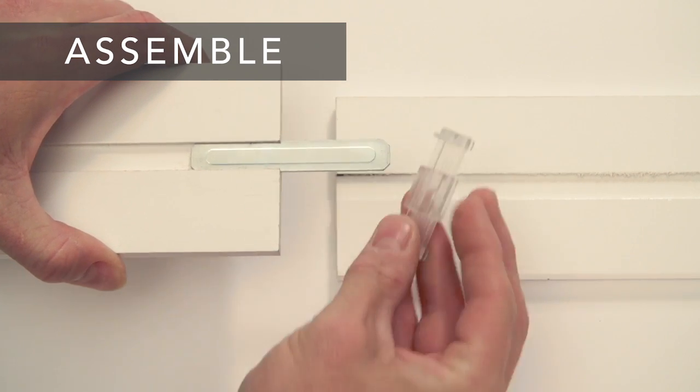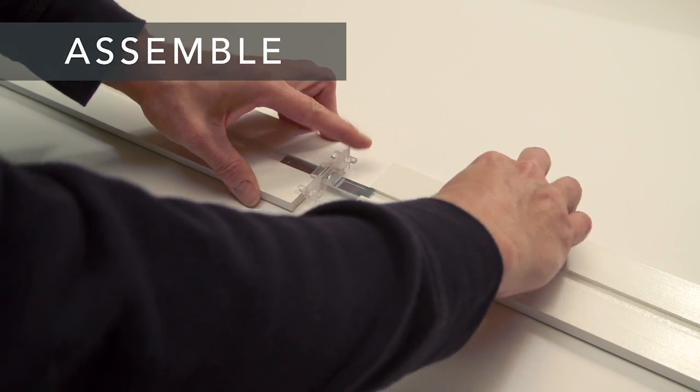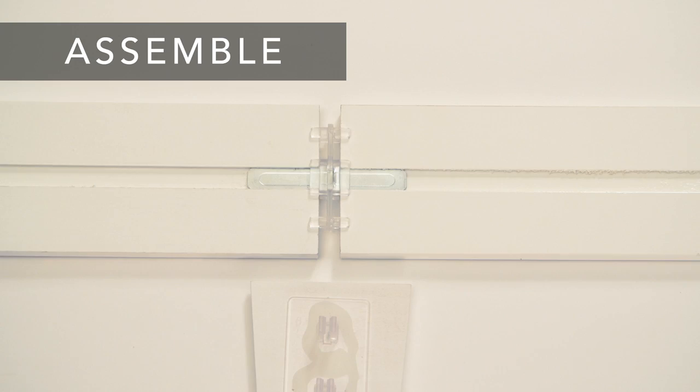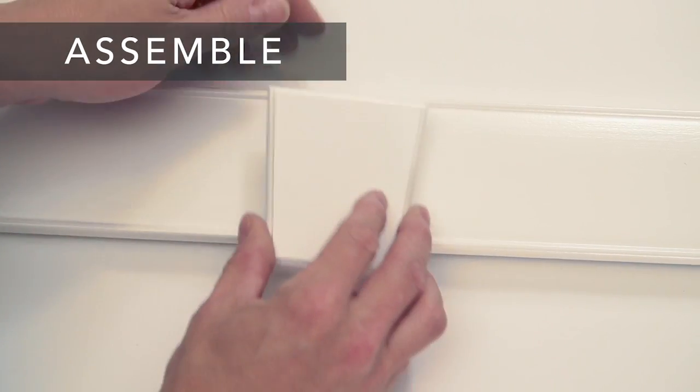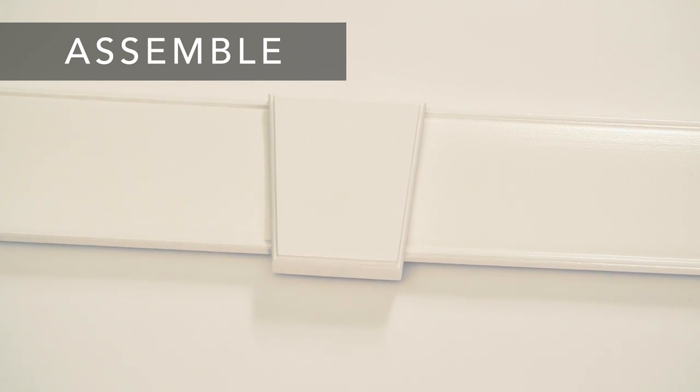Slide the keystone spacer over the splice plate with the spacer tabs toward the back of the valance. Slide the second valance piece into the splice plate and keystone spacer. Turn the valance face side up and align the keystone back plate legs with the spacer and press the keystone into place.